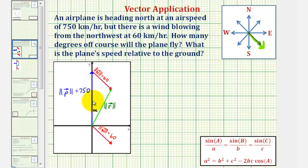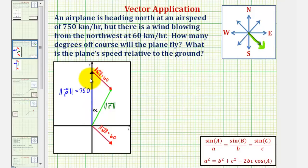Before we do this, there's one more key piece of information. Analyzing the triangle, because vector w is blowing in the direction of southeast, it forms a 45-degree angle with its vertical axis, or vector p. So this angle here measures 45 degrees. This is important, because now we can determine the magnitude of vector r using the law of cosines.